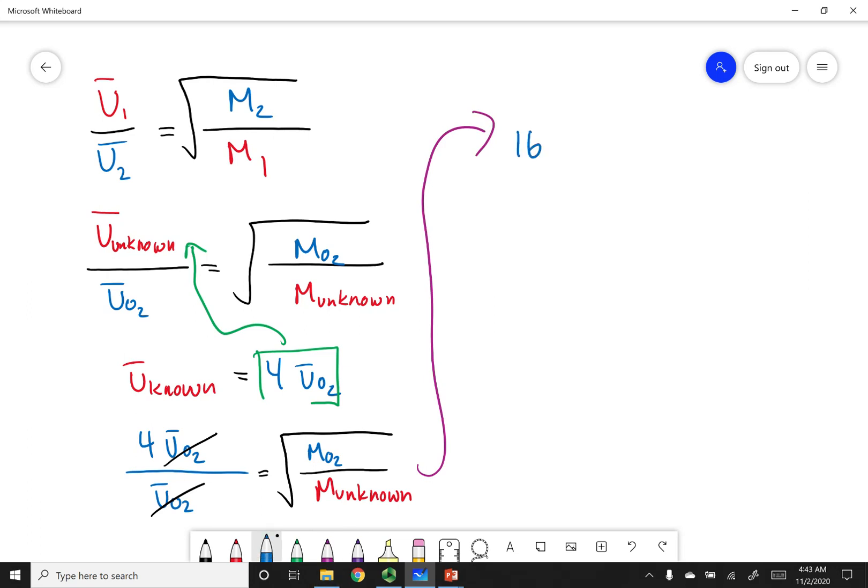So I get 16 equals the molar mass of oxygen, and I can look this up on the periodic table. That's going to be 32 grams per mole. And on the bottom, I have the molar mass of my unknown. Solving for the molar mass of my unknown, I find that it is 2 grams per mole.